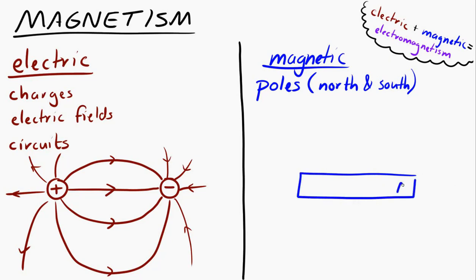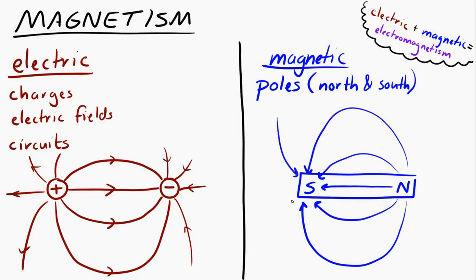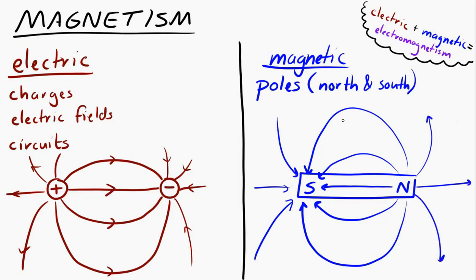I'll draw an example of a north pole and a south pole together with the magnetic field. The magnetic field lines have many of the same properties as electric field lines — closer field lines indicate a stronger field, and they do not cross. One thing that's a little different is that the magnetic field lines emanate or come out of the north pole and terminate or go into the south pole.